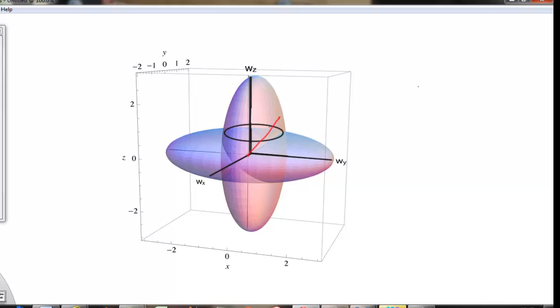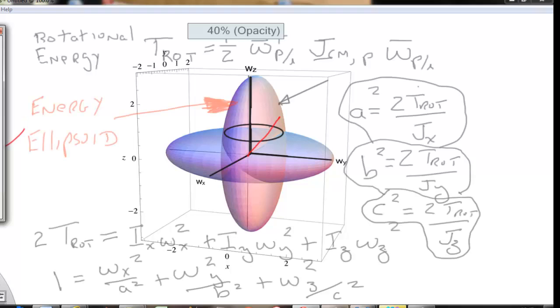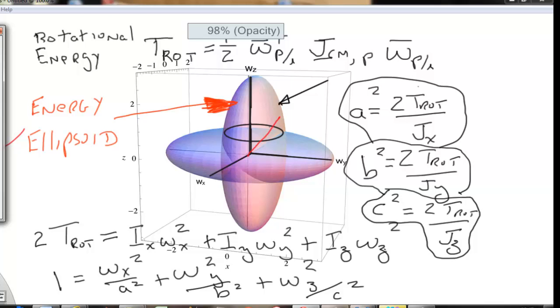So, how do we get these ellipsoids? Well, the energy ellipsoid is given by this formula up here, and if you multiply that out, you get the rotational energy.